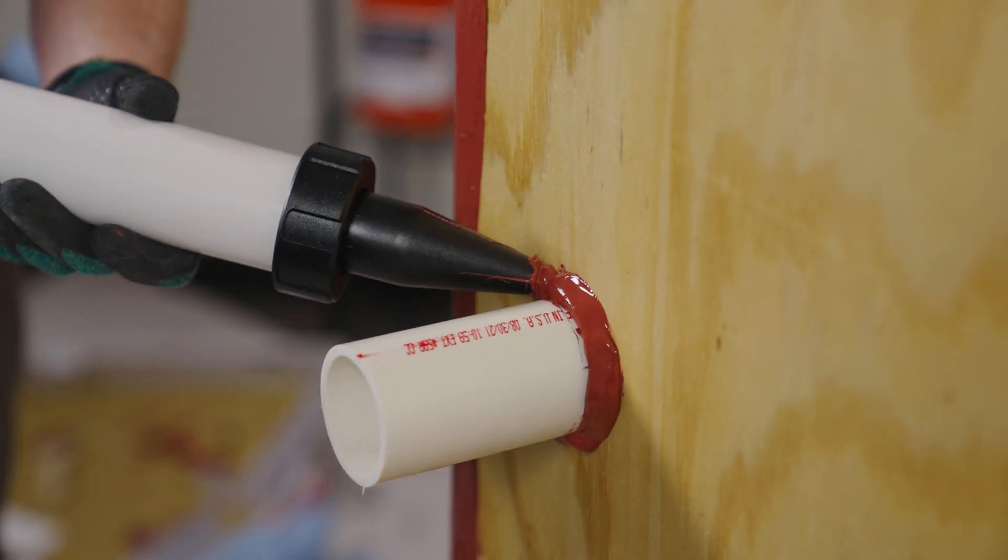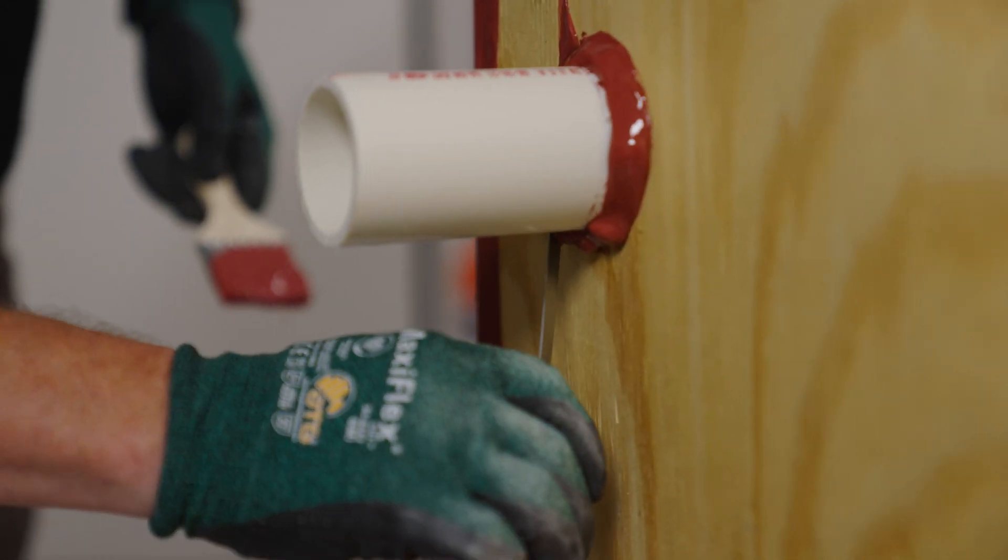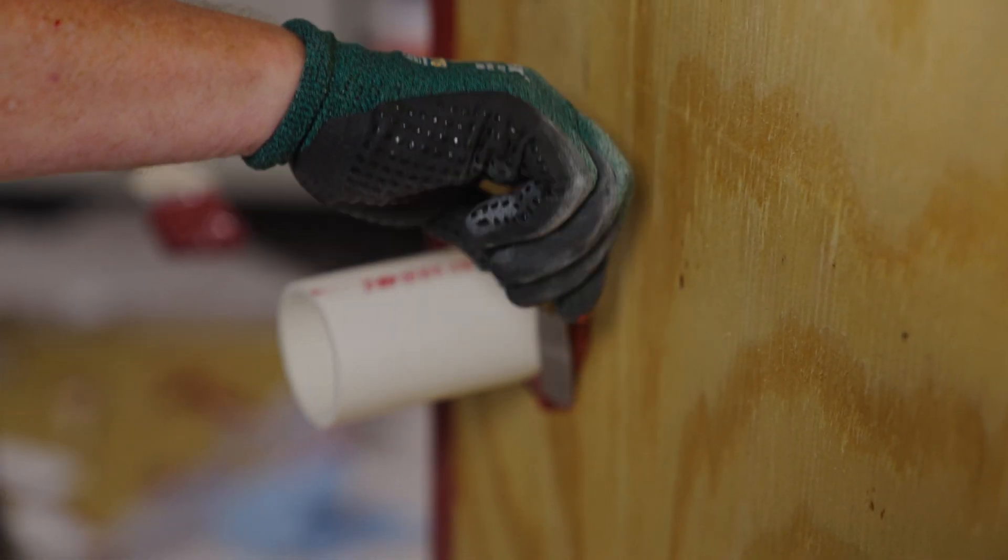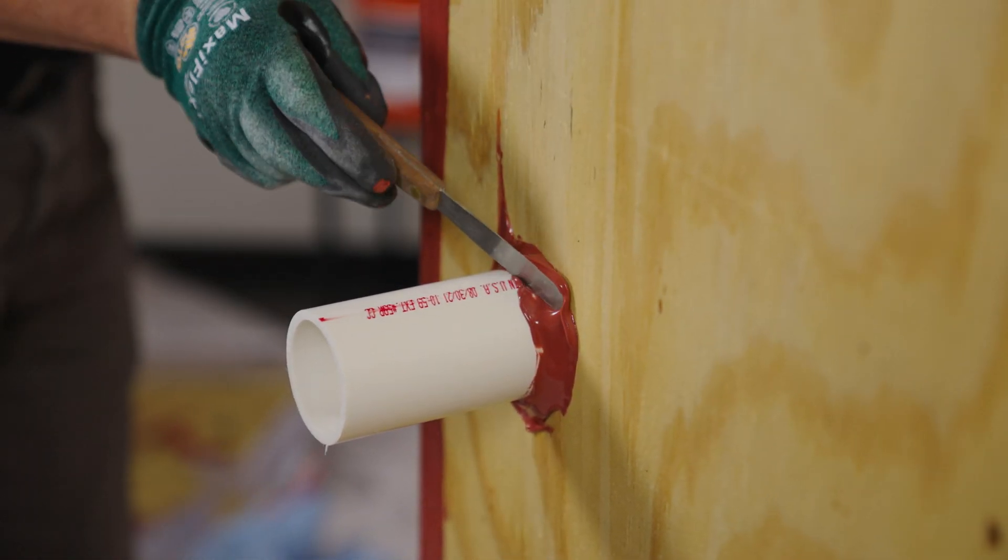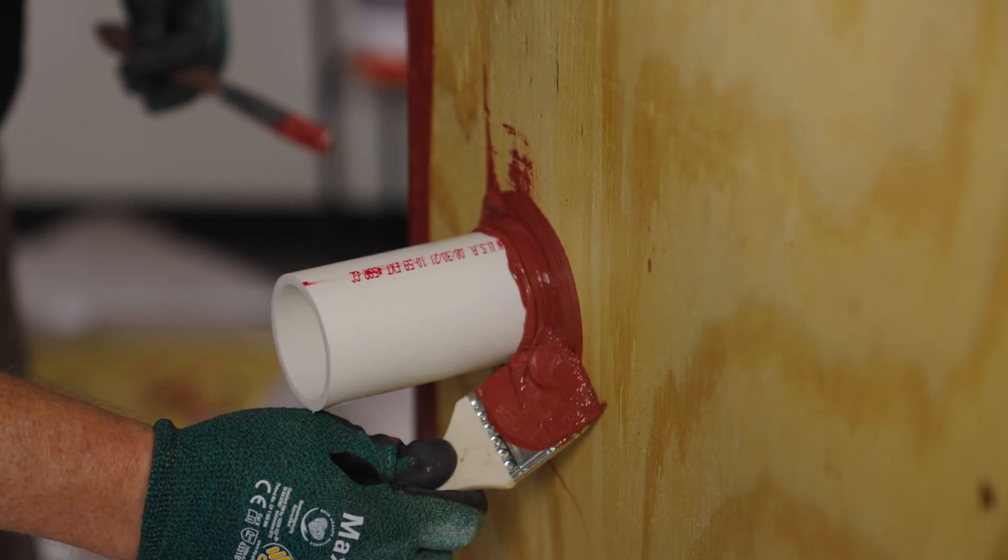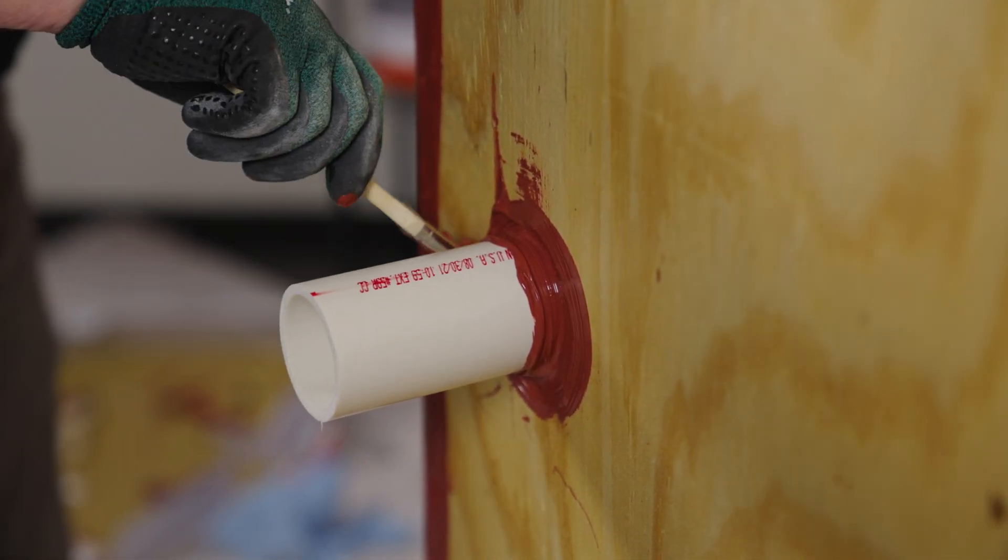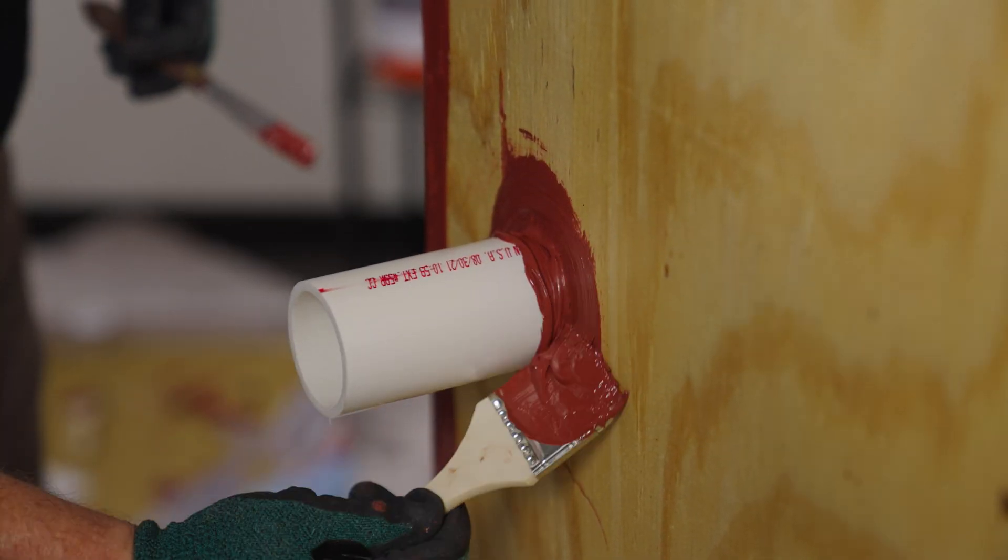Use your chip brush or Bondo knife and run a minimum one inch on the face of the substrate. Then, if you can, run a minimum one inch on the penetration itself. Whether that be a pipe or any other kind of conduit running through the wall, you want to try to get at least one inch on both sides.